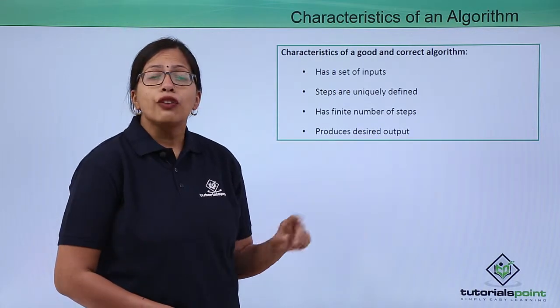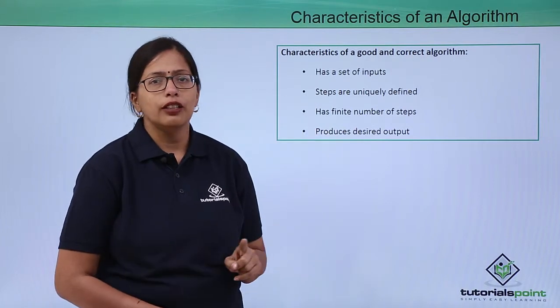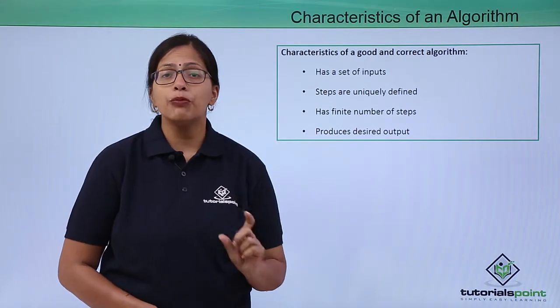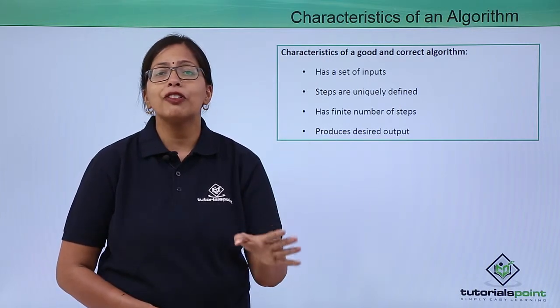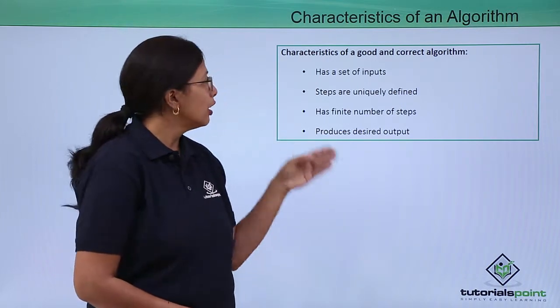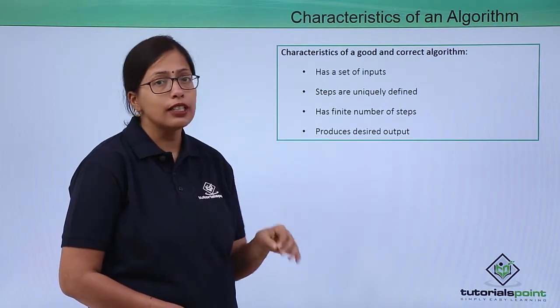These are the characteristics of a good and correct algorithm. The word correct is very important here because we are using the algorithm to identify or come up with a correct solution. It has a set of inputs. If there are no inputs, there cannot be any algorithm.